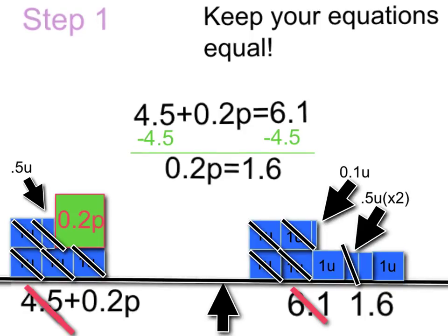So now we're left with 2 tenths p is equal to 1 and 6 tenths, and this sets us up for the next part of the equation.